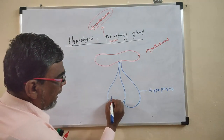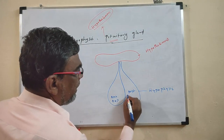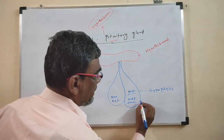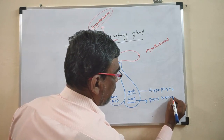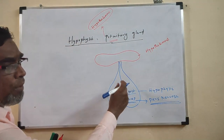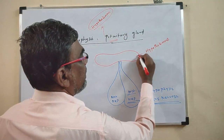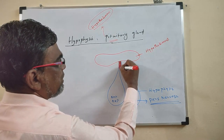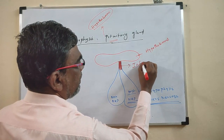The pituitary has two lobes — the anterior lobe called adenohypophysis and the posterior lobe called neurohypophysis, also known as pars nervosa. These two lobes of the pituitary are attached to the hypothalamus with the help of a small stalk called the infundibulum.